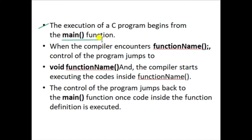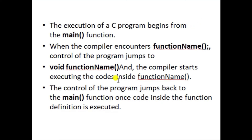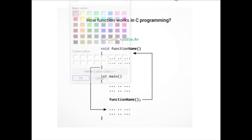The execution of a C program begins from the main function. When the compiler encounters the function name inside main, control of the program jumps to the function body and performs all the operations. After executing the code inside the function, the compiler finishes executing, and then the control of the program jumps back to the main function. After all operations inside the function body are done, it returns the value to main.